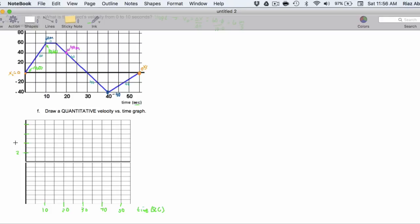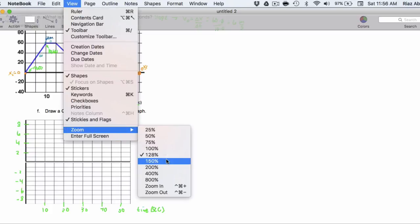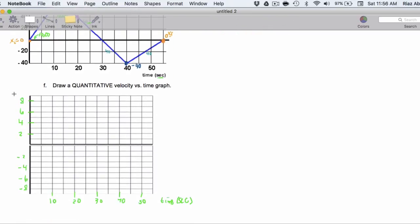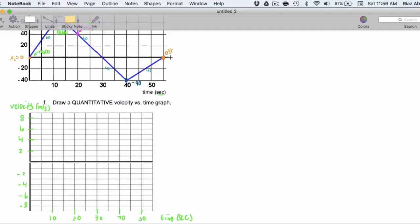So, 2, 4, 6, 8. Negative 2, negative 4, negative 6, negative 8. And now I can zoom up a little bit just to get a bigger size. And this is velocity versus time. So, this is going to be velocity in meters per second.